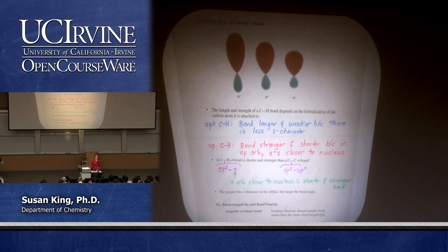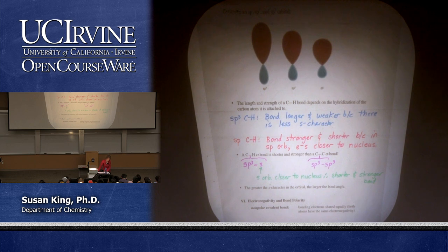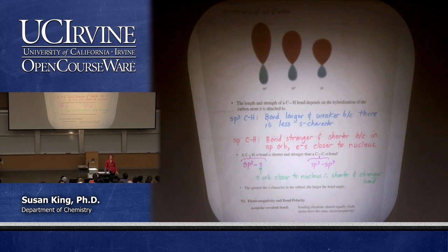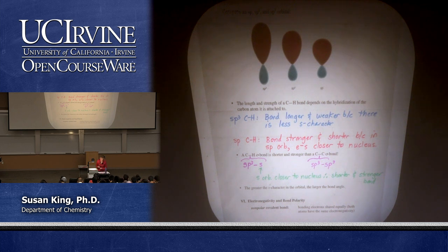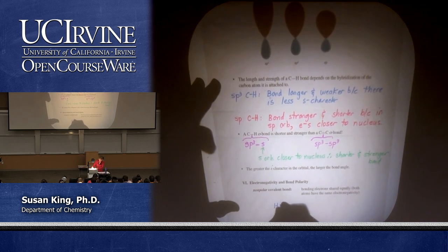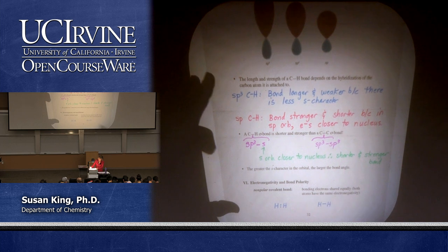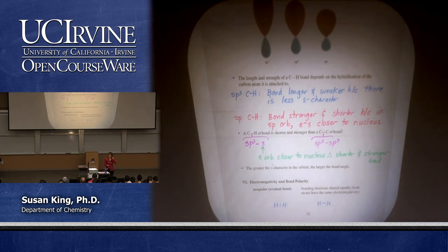Let's talk about electronegativity and bond polarity. We have nonpolar covalent bonds where the bonding electrons are shared equally, and this happens when we have both atoms of the same electronegativity. The classic example is hydrogen, which we can draw with two dots for the shared electron pair or with a line which also signifies a shared electron pair.